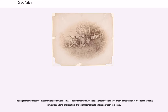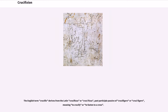The English term cross derives from the Latin word crux. The Latin term crux classically referred to a tree or any construction of wood used to hang criminals as a form of execution, and later came to refer specifically to a cross. The English term crucifix derives from the Latin crucifixus, past participle passive of crucifigere, meaning to crucify or to fasten to a cross.